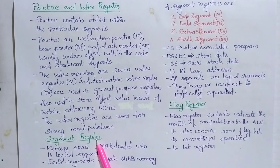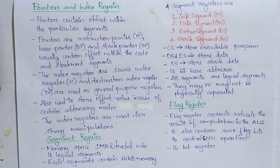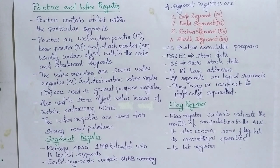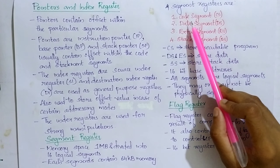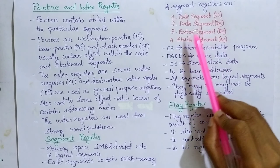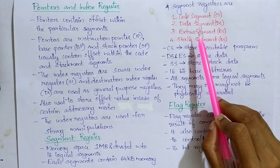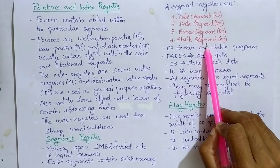The third category is the segment register. The segment register has a memory space of 1 megabyte, divided into 16 logical segments, and each segment contains 64 kilobytes of memory. The segment registers are divided into four: CS (code segment), DS (data segment), ES (extra segment), and SS (stack segment).